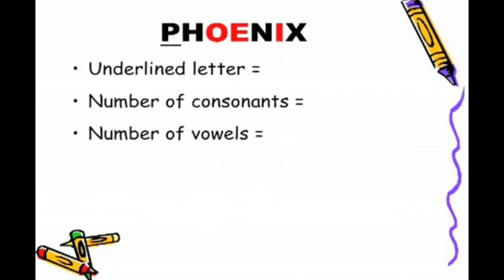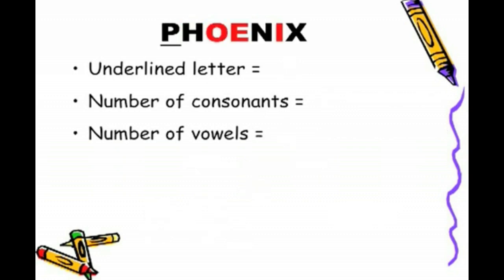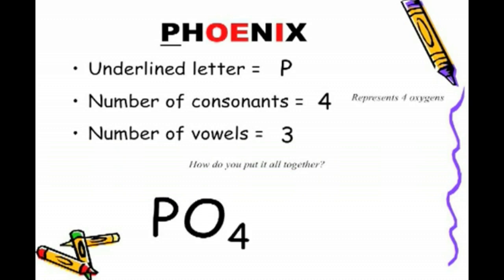And lastly, phoenix. Very important that you know how to spell the word phoenix. Same thing goes with supper. We don't forget that extra P. Phoenix, underlying letter is P. Number of consonants, four. Number of vowels here are three. So, how do we put it all together? Start off with P. Four consonants, four oxygen, so PO4. Three vowels, three negative charges, negative three. In the name, it's the derivative of phosphorus, so because there's oxygen present, we call that phosphate.